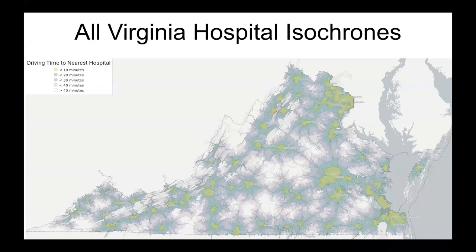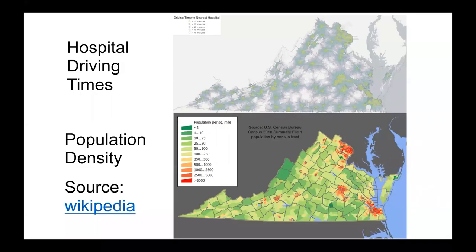This is the same figure showing all the hospitals in Virginia. One thing to notice is that the areas in green are mostly around cities, and the areas in white are rural, less populated areas. If we compare this to a population density map of Virginia, we can confirm that. There's a running joke that a lot of maps just look like population density maps, and this might be one of them.